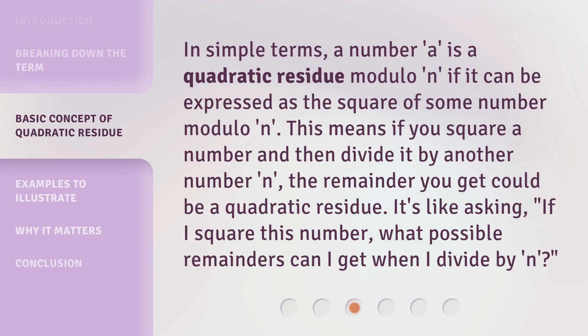In simple terms, a number 'a' is a quadratic residue modulo 'n' if it can be expressed as the square of some number modulo n. This means if you square a number and then divide it by another number 'n', the remainder you get could be a quadratic residue.